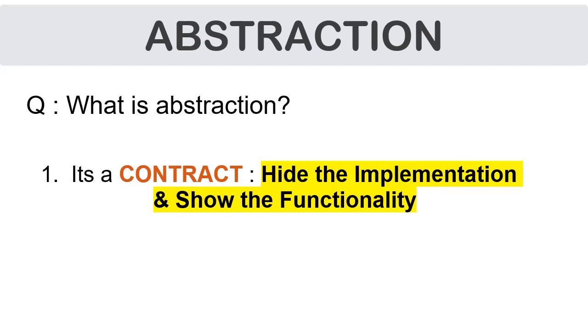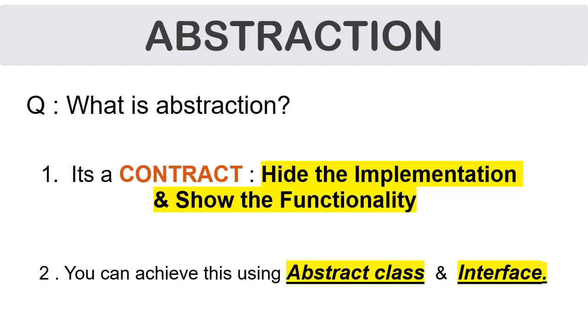It's a contract where we hide the implementation and we show the functionality. And to achieve abstraction, we use abstract class and interfaces.